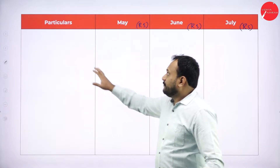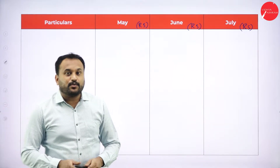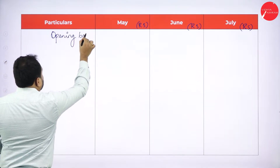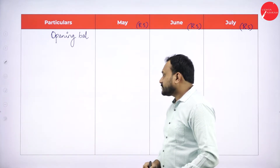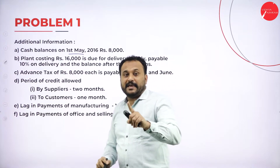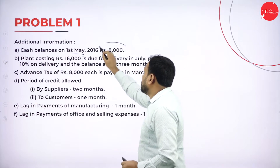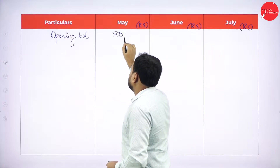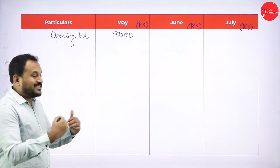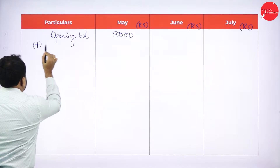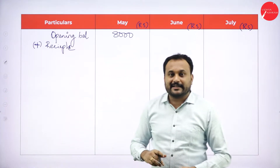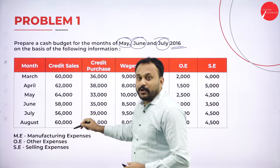When we go with particulars, the first thing is opening balance. The opening balance will be given in the question paper. From the additional information: cash balance on 1st May — since we are preparing from May, June, July — the opening balance of May is 8,000 rupees. I'll write 8,000 rupees here. After opening balance, I need to add all receipts.